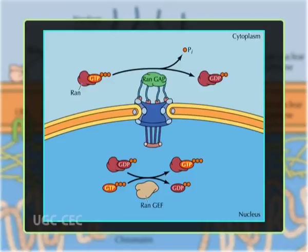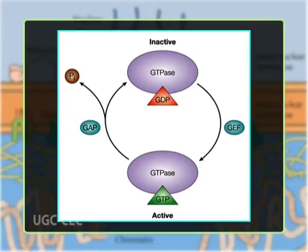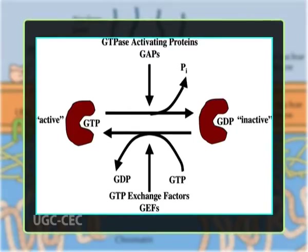Importin proteins bind their cargo in the cytoplasm, after which they are able to interact with the nuclear pore complex and pass through its channel. Once inside the nucleus, interaction with Ran-GTP causes a conformational change in the importin that causes it to dissociate from its cargo. The resulting complex of importin and Ran-GTP then translocates to the cytoplasm, where a protein called Ran-binding protein separates Ran-GTP from importin. This separation allows access to GTPases that bind Ran-GTP and induce the hydrolysis of GTP to GDP. The Ran-GDP produced then binds nuclear transport factor 2, which returns it to the nucleoplasm, where the guanine nucleotide exchange factor replaces the GDP with GTP, resulting again in Ran-GTP and beginning the cycle anew.